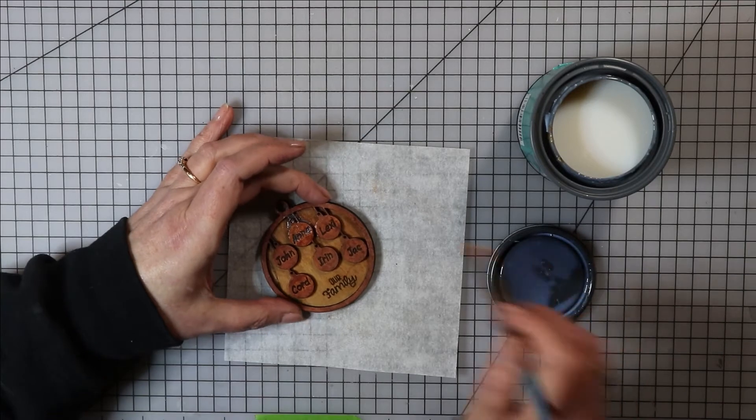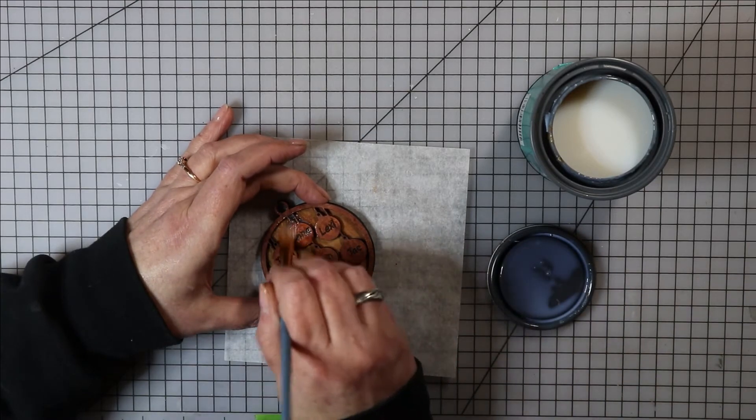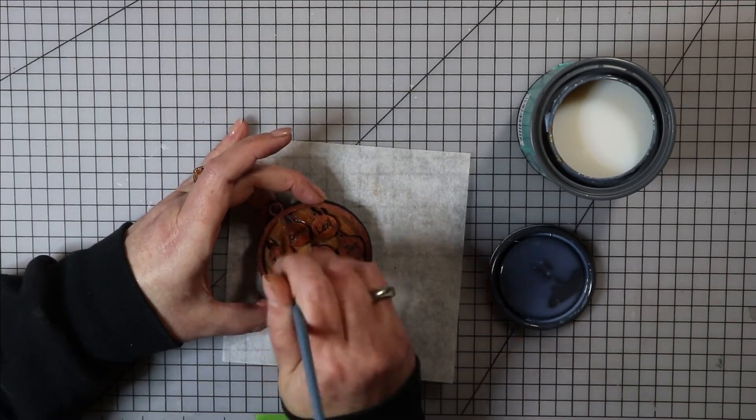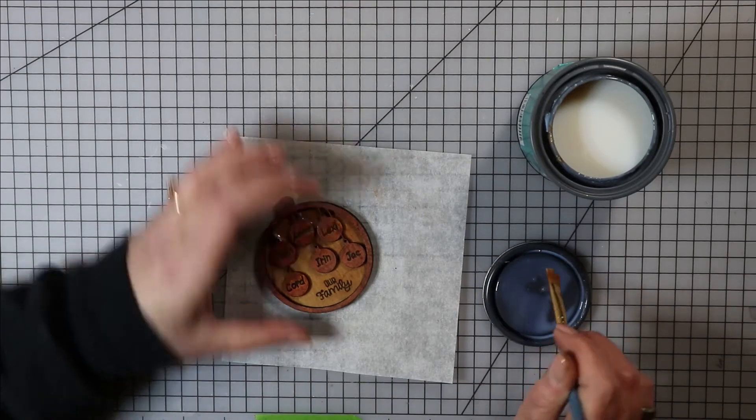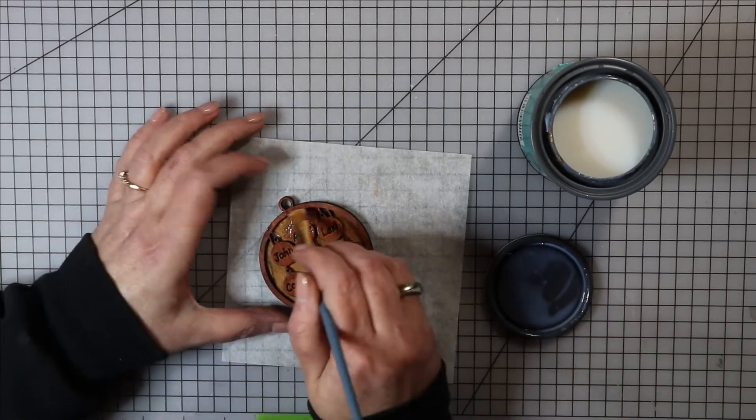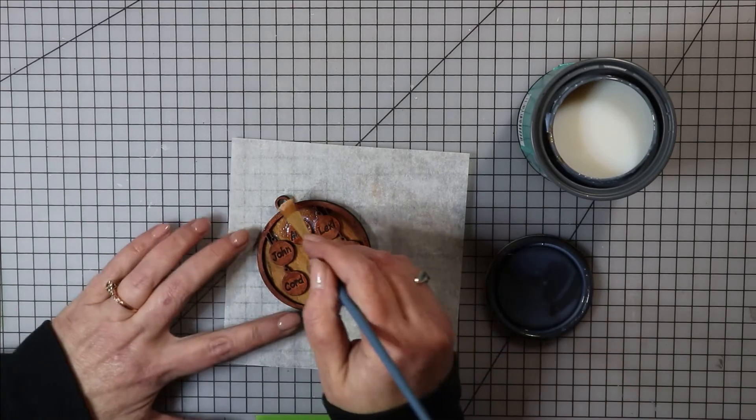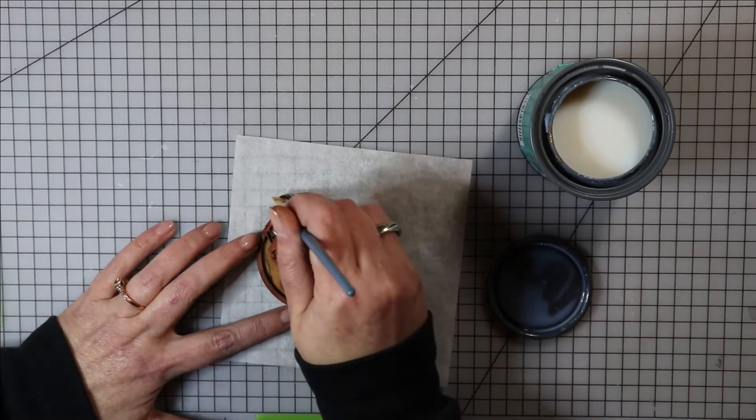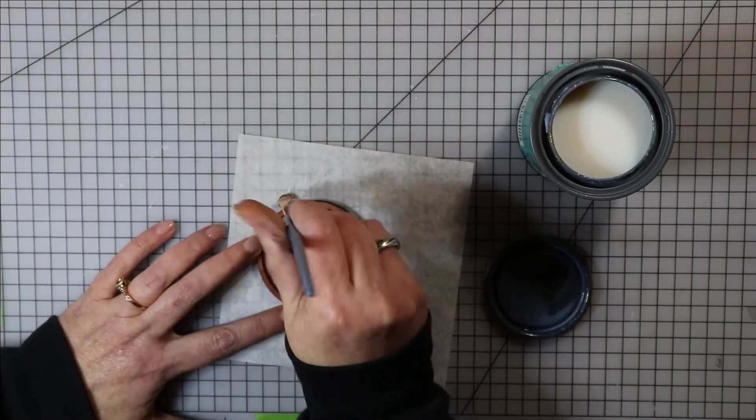I then made the mistake of hanging my ornament up to dry so that I could seal both the front and the back at the same time. This was a bad, bad idea. It dripped—big globby 3D drips.